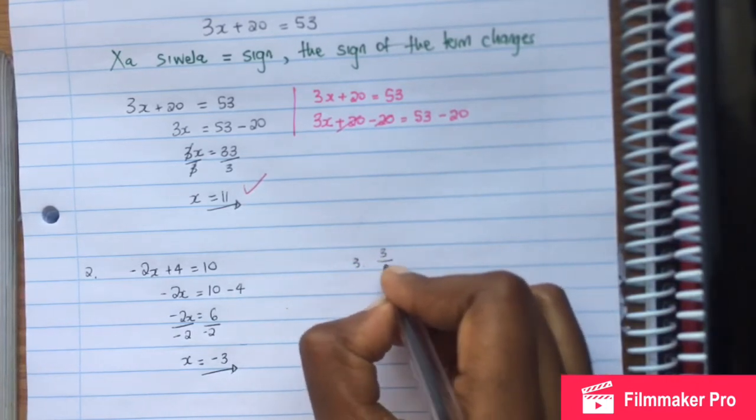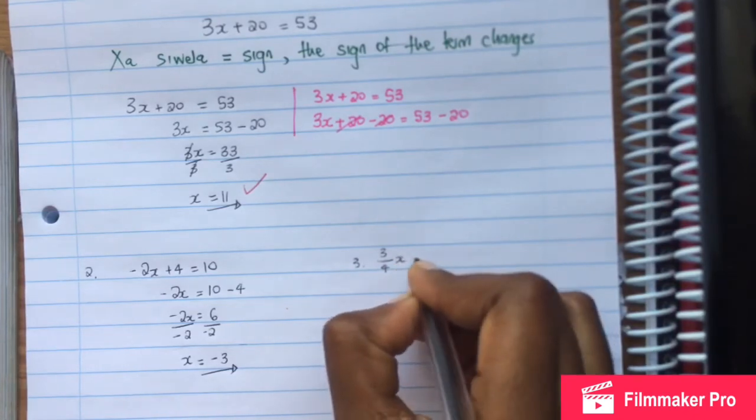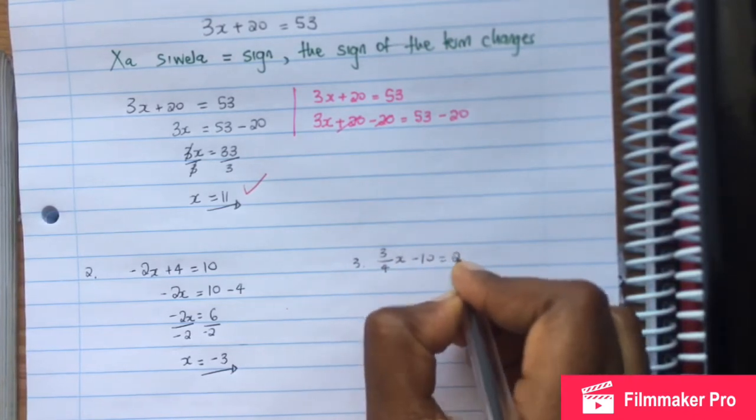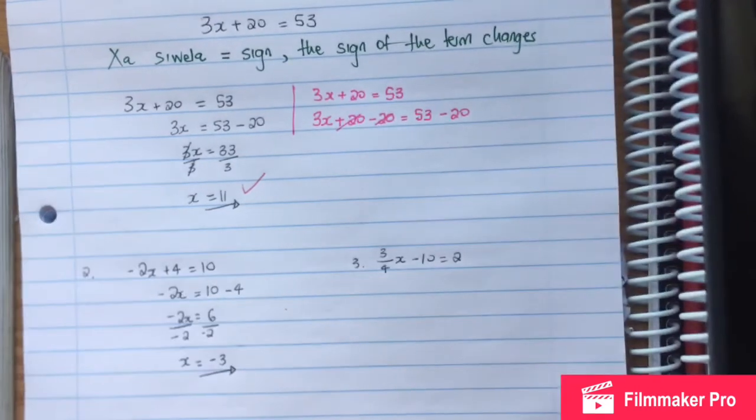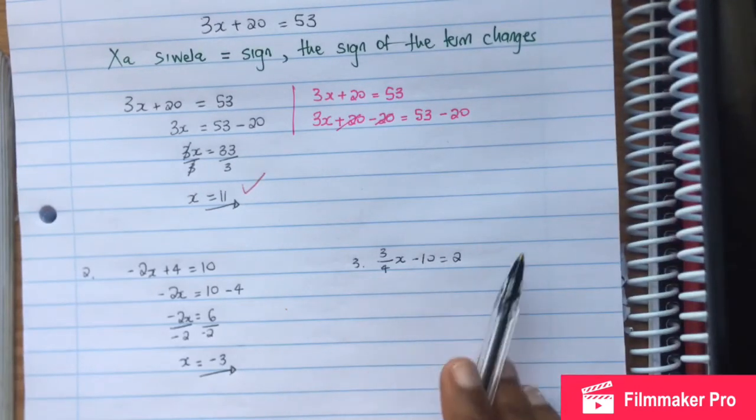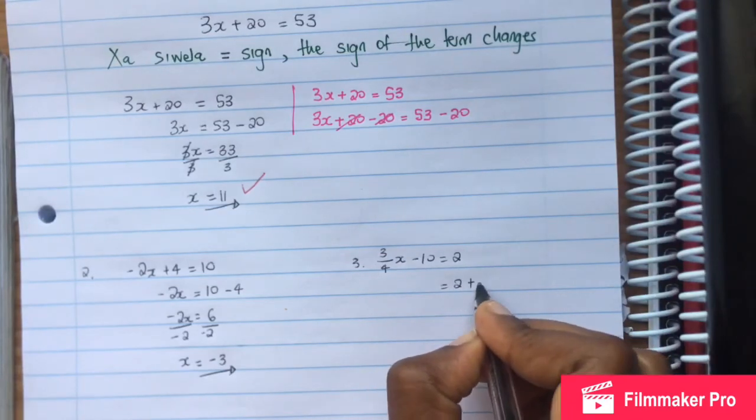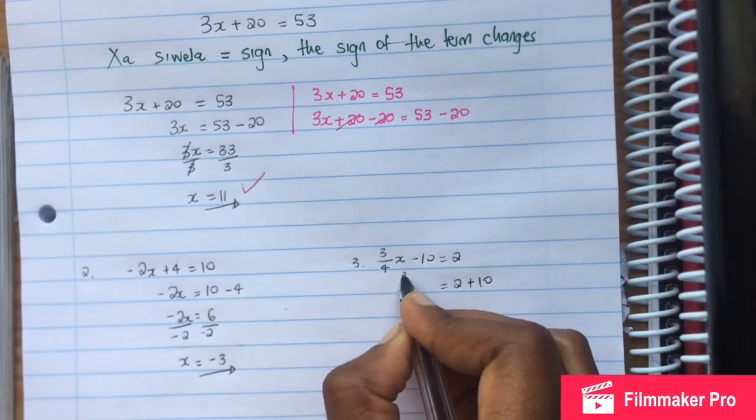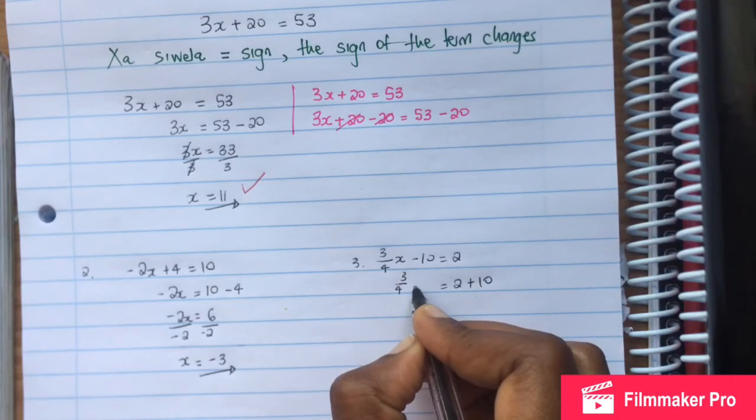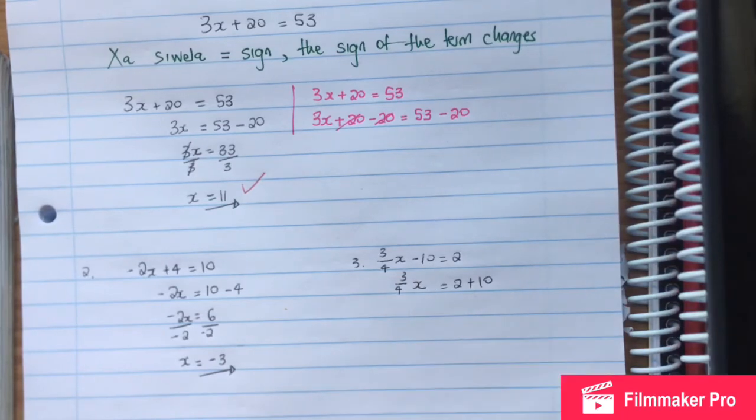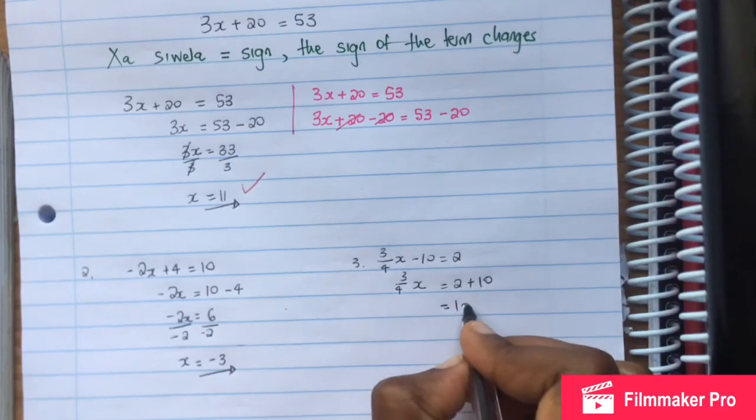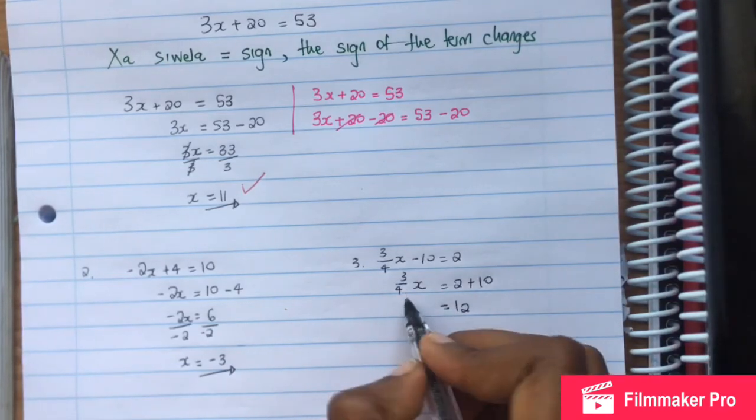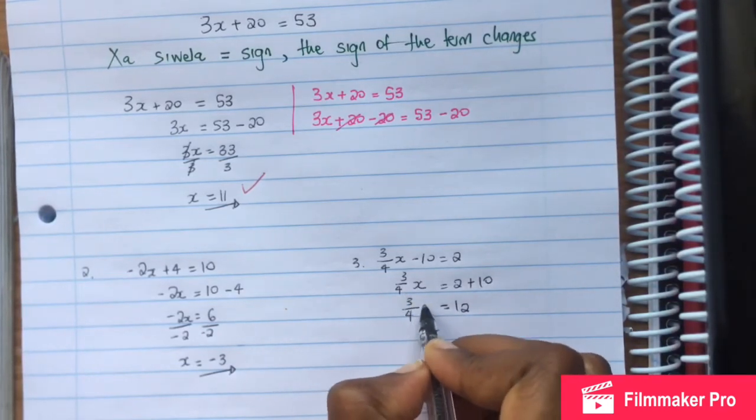3 over 4, x minus 10 is equal to 2. The 10 is negative, so when we move it across it becomes positive. We have 3 over 4 x, and this is 2 plus 10 which is 12.